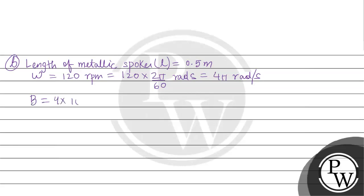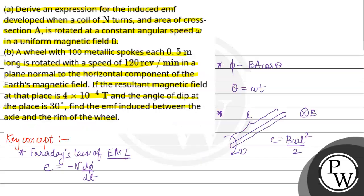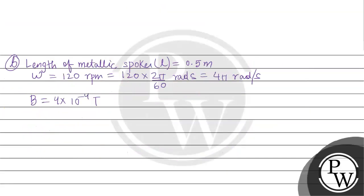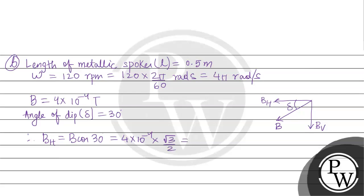B value is 4 times 10 to the minus 4 tesla, the resultant magnetic field. B horizontal component is related to B by the angle of dip delta. Angle of dip is 30 degrees. Therefore, B horizontal component equals B cos 30 degrees, which is 4 times 10 to the minus 4 times root 3 over 2, which becomes 2 root 3 times 10 to the minus 4 tesla.